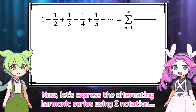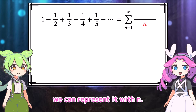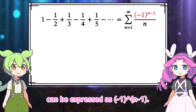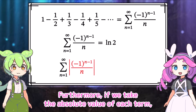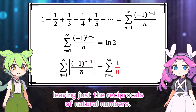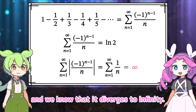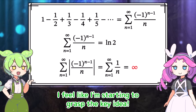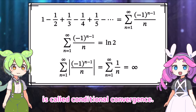Let's express the alternating harmonic series using sigma notation. Since the denominator increases by one each time, we can represent it with n. The alternating signs can be expressed as negative one to the n minus one. We know this sum converges to the natural log of two. Furthermore, if we take the absolute value of each term, the factor negative one to the n minus one disappears, leaving just the reciprocals of natural numbers — the harmonic series — which diverges to infinity. This strange property of the alternating harmonic series is called conditional convergence.